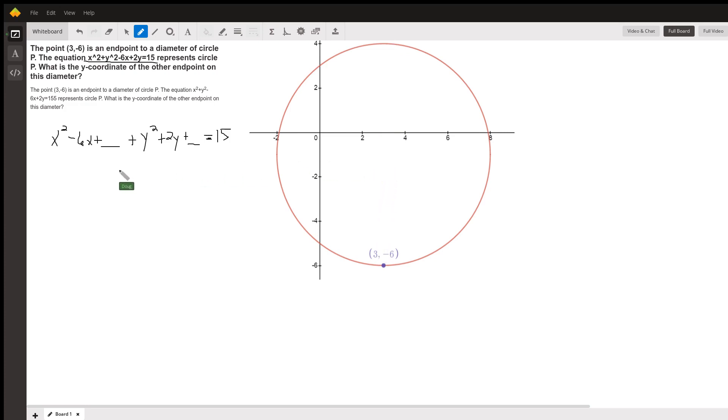And we do that by completing the square. I reorganized the terms here so that we can see that we have to fill in this blank with the number that will turn the first three terms into a perfect square.